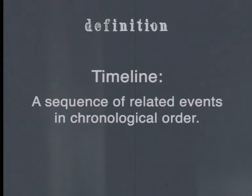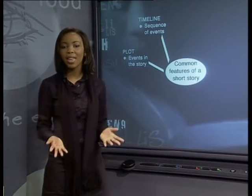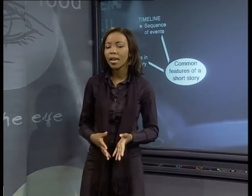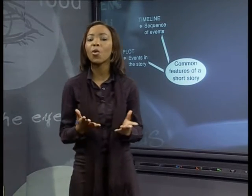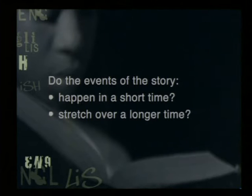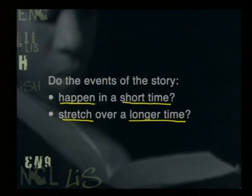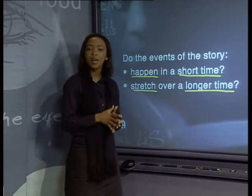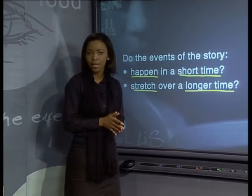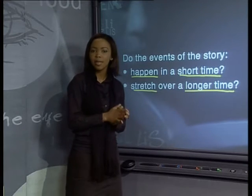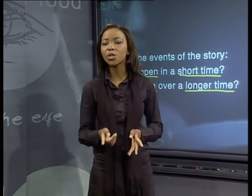Another feature of short stories is their timeline. Timelines are sequences of related events in chronological order — a timeline lists events in the order in which they occur. The events may happen over many years, or they may be crammed into just a few hours. When thinking about the timeline of a short story, we need to ask about the timescale used by the author. If events happen in a short time, the story will be concentrated with more detail. If they happen over a longer time, the narrative will be thinner, with less detail about each individual event.